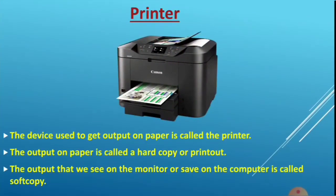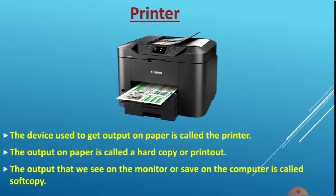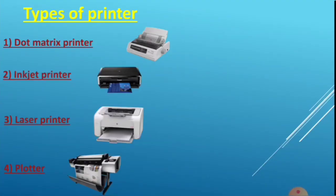Next is the printer. The printer is used to get output on paper, and output on paper is called a hard copy or printout. Anything from the computer we can print using a printer. There are four types of printers: dot matrix printer, inkjet printer, laser printer, and plotter.